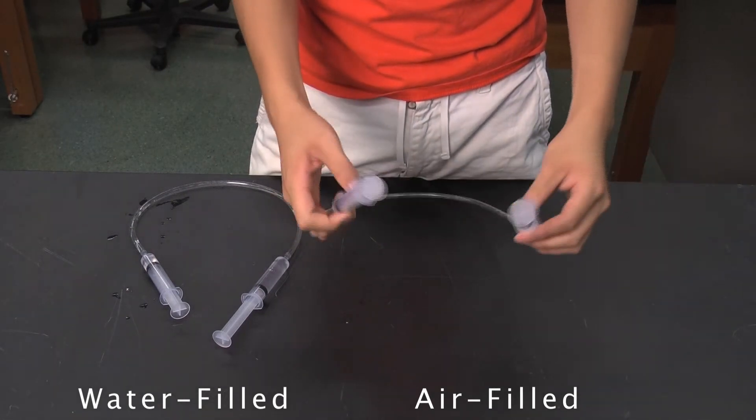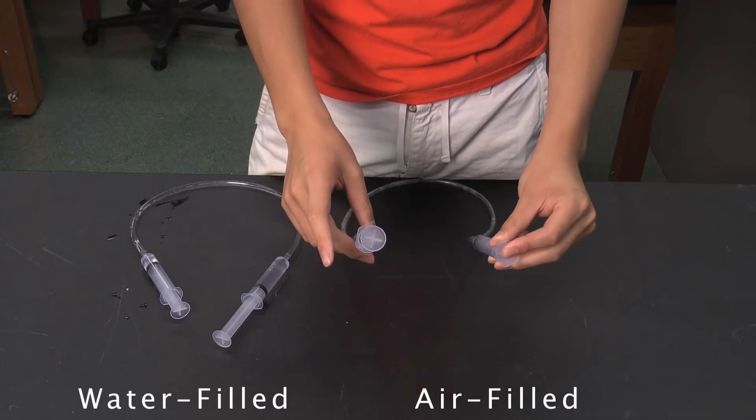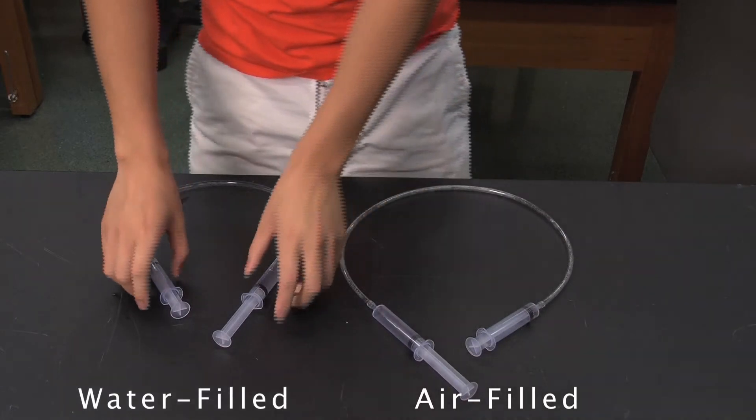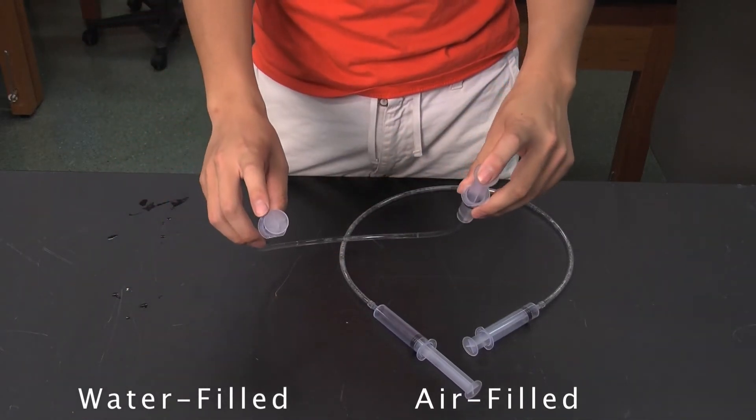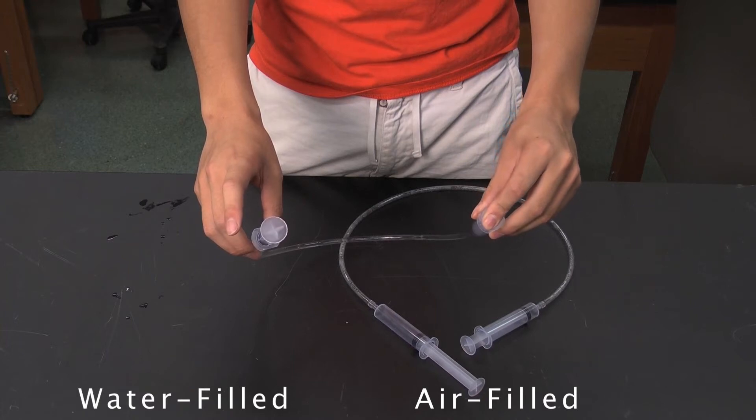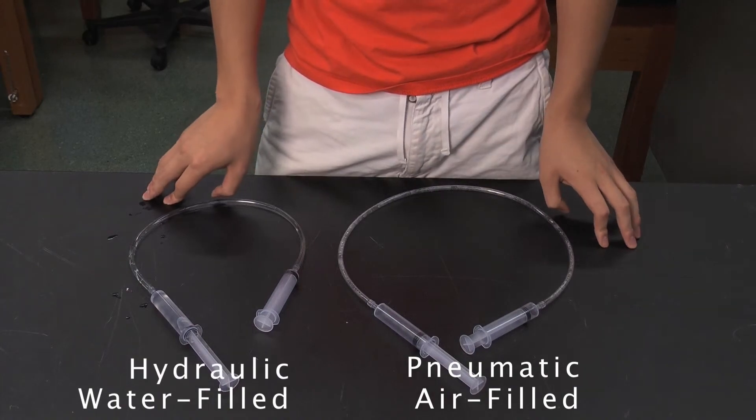The answer is because air is a gas and is compressible, meaning some of the pushing from the syringe will actually go to compressing the gas and therefore not to transferring motion. The water, on the other hand, transfers motion much better because liquids are not compressible. The air-filled system is called a pneumatic system and the water-filled system is called a hydraulic system.